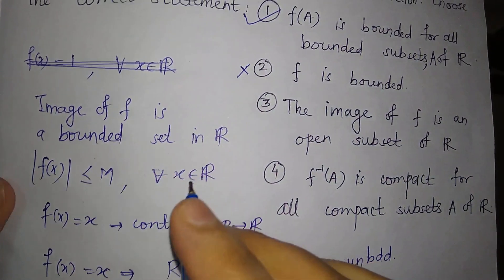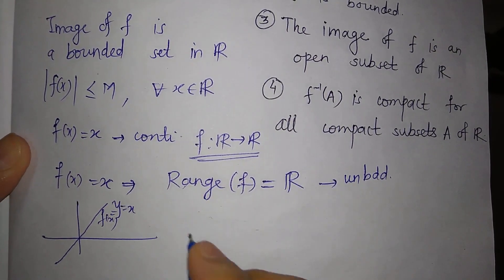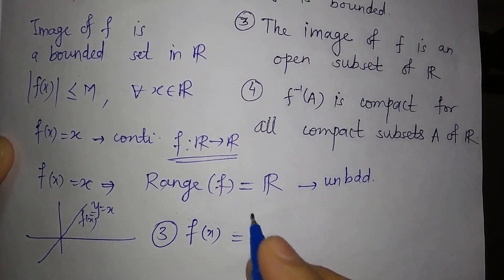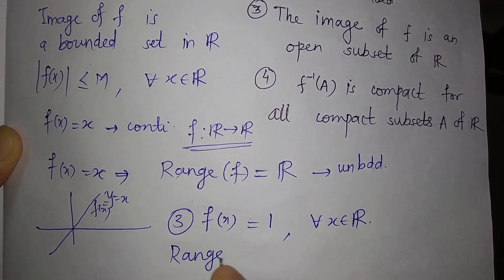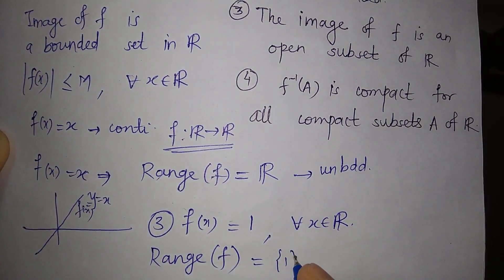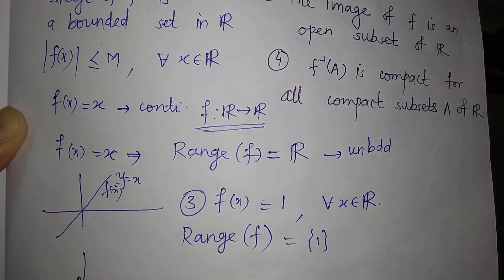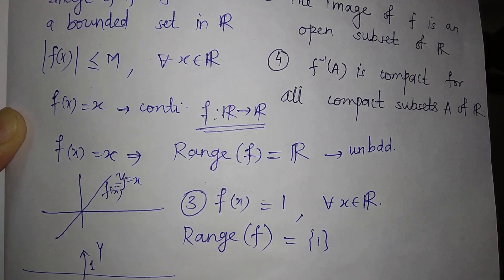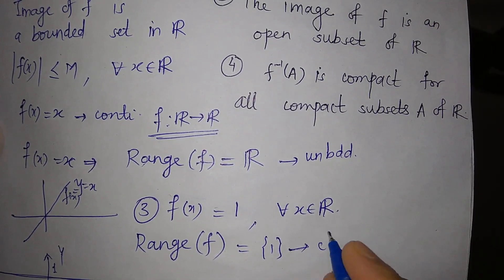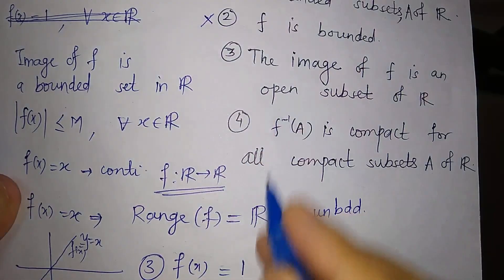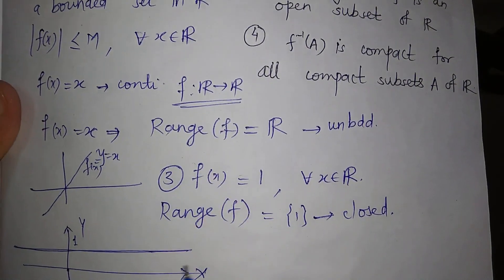For the third option — the image of f is an open subset of R — take f(x) = 1 for all x in R, the constant function. The range of f is just the singleton {1}, because for every x the value is 1. The graph is a horizontal line at height 1. But singleton sets are closed in R, so the image is not open. This is a counter-example, so the third statement is also not true.